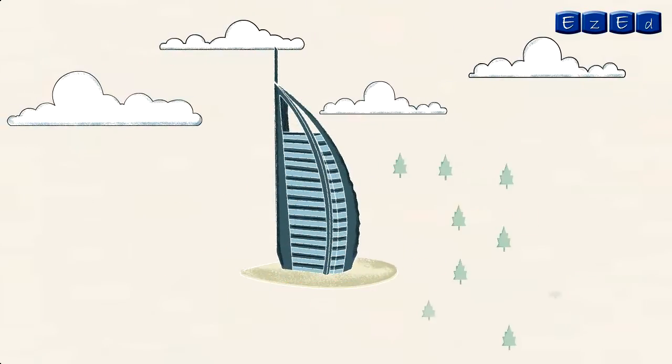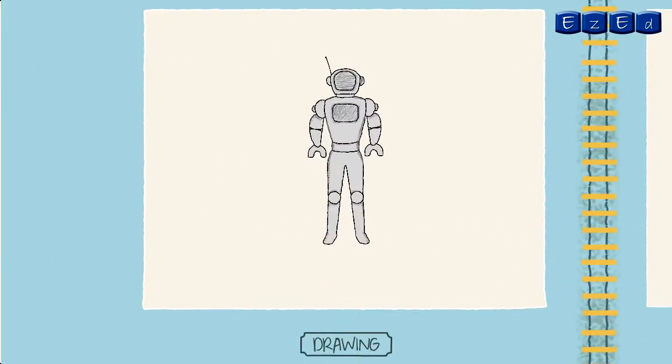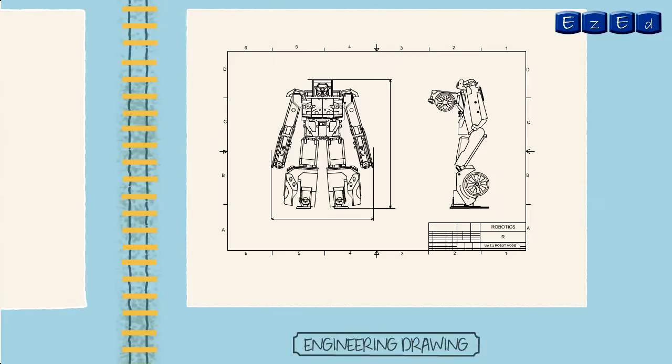Easy Ed course on Engineering Drawing provides wide exposure of understanding the objects with the help of drawing. The difference between drawing and engineering drawing is that in drawing there is no rule, while in engineering drawing rules are to be followed according to ISO standards.